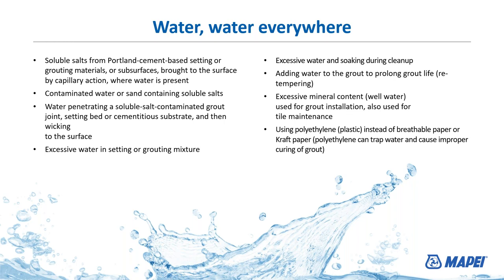Using polyethylene plastic sheeting on top of the tile afterwards to protect it, instead of craft paper, can trap water and cause improper curing of the grout, which can also lead to efflorescence. If that grout is covered too quickly while it's still trying to evaporate moisture, the plastic locks moisture in, retards the evaporation rate of the water in the grout, and messes up the chemistry, causing issues with turning white from efflorescence.